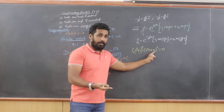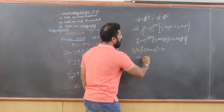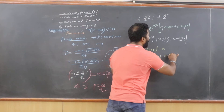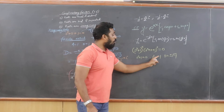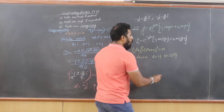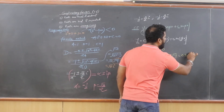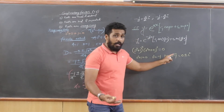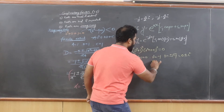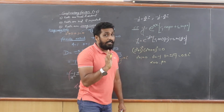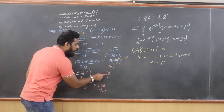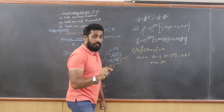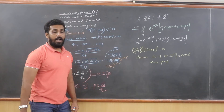For d² + 1 = 0: d² = -1, so d = ±√(-1) = ±i, which can be written as 0 ± i. There is no real part, so α = 0. Comparing with α ± iβ, we get β = 1 (not i). Since d² + 1 appears cubed, these roots 0 ± i repeat 3 times.